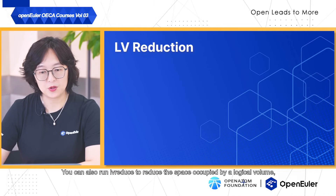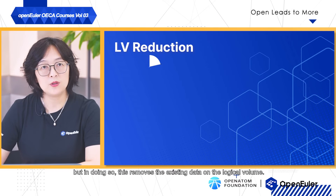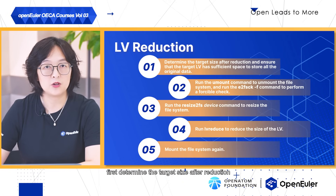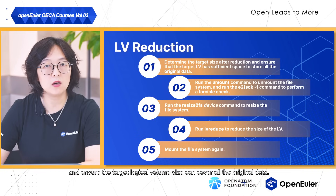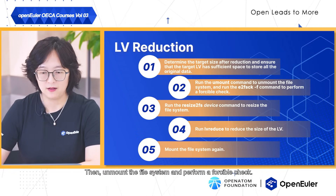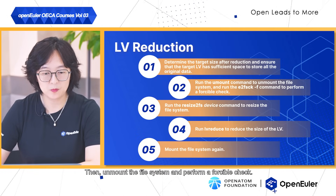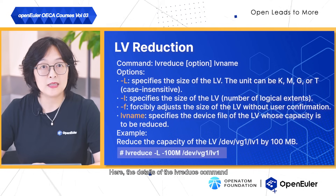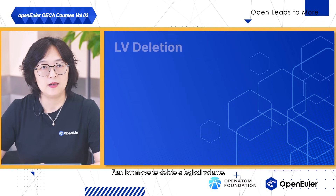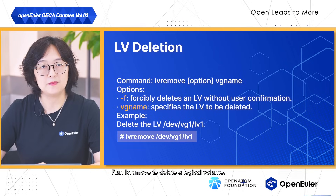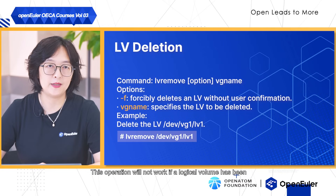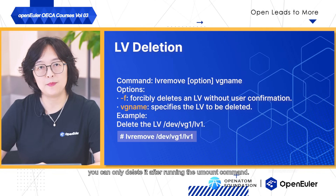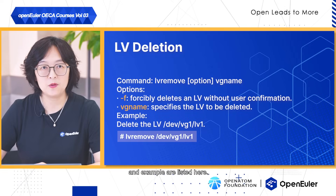You can also run lvreduce to reduce the space occupied by a logical volume, but this removes the existing data on the logical volume. To perform this operation, first determine the target size after reduction and ensure that the target logical volume size can cover all the original data. Then unmount the file system and perform a forceful check. Finally, shrink the file system and reduce the size of the logical volume. The lvremove command is used to delete a logical volume. This operation will not work if a logical volume has been mounted. In that case, you can only delete it after running the unmount command.